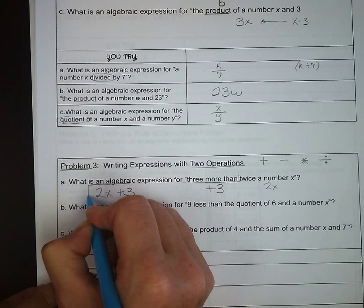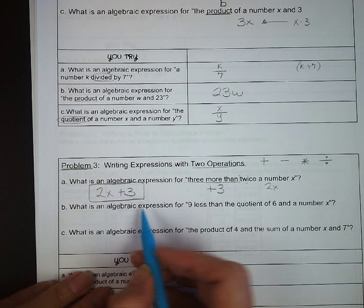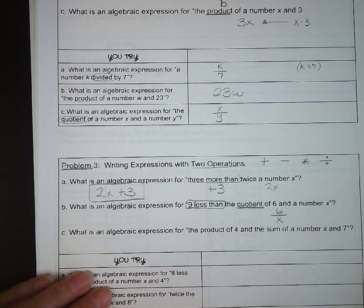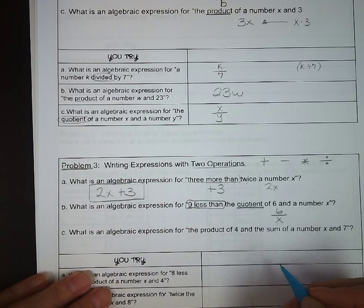Letter b, what is an algebraic expression for nine less than the quotient of six and a number x? So we have less than, we have quotient. So quotient is division, we have six over x, and then we have nine less than that quotient, so it's minus nine.